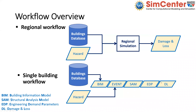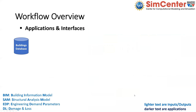For every single building, we need to obtain five different files. The parallelograms with yellow background and light blue color shown here are input or output files: BIM, event, SAM, EDP, and damage and loss. I'll go through more details about the applications and interfaces and how it works.